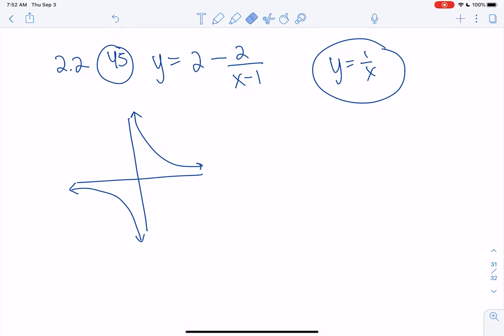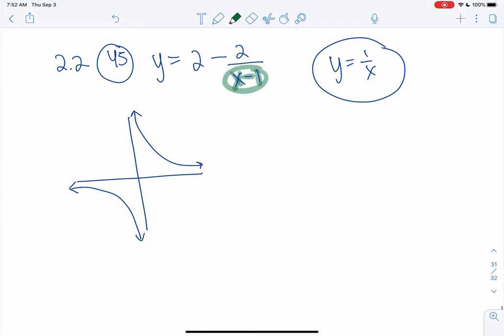So I'm going to kind of work my way from the middle out. We know we start with 1 over x, that's why we have the x here, and then we'll kind of see what the minus 1 does and then we'll worry about the other stuff.